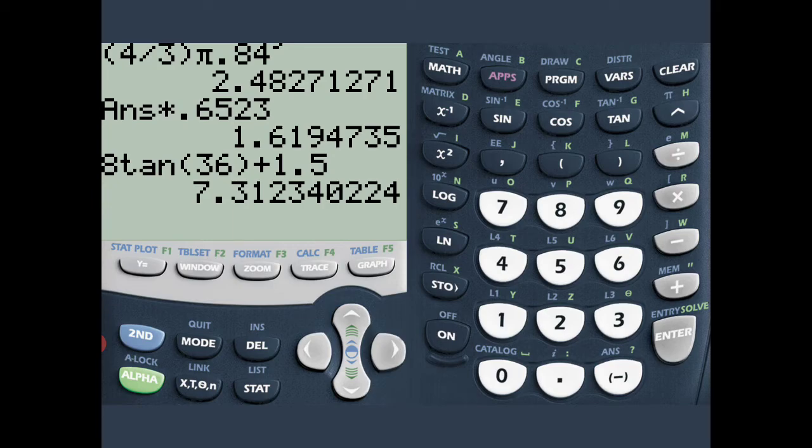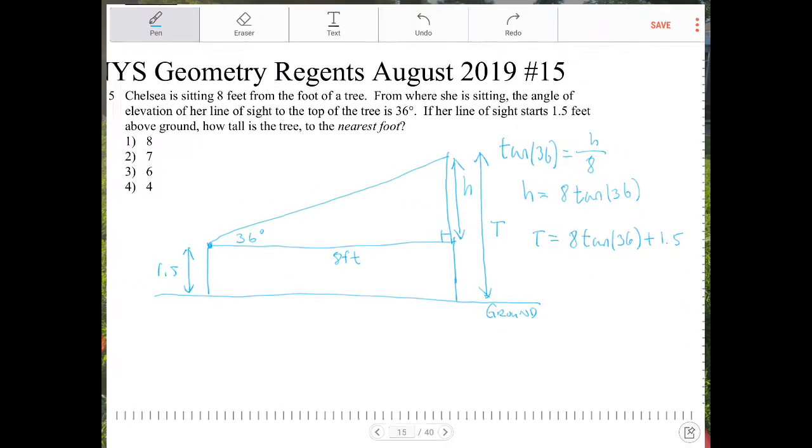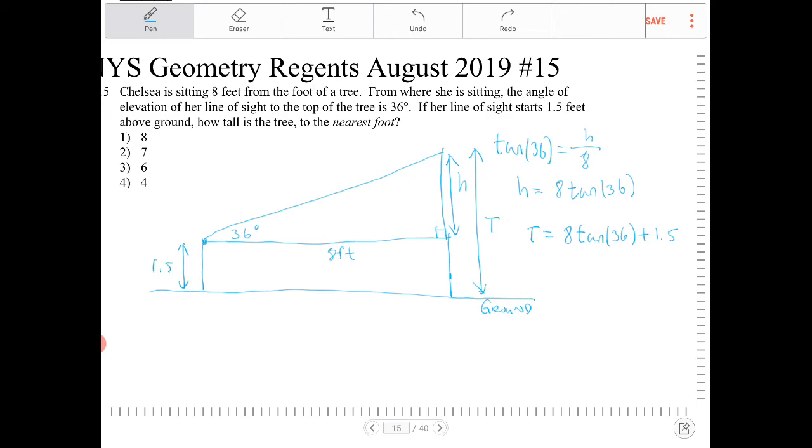So we have 7.3 approximately. And the question says to round to the nearest foot. So if this T is 7.3 approximately, and we want to round to the nearest foot, that would be 7 feet then. That would be option 2.